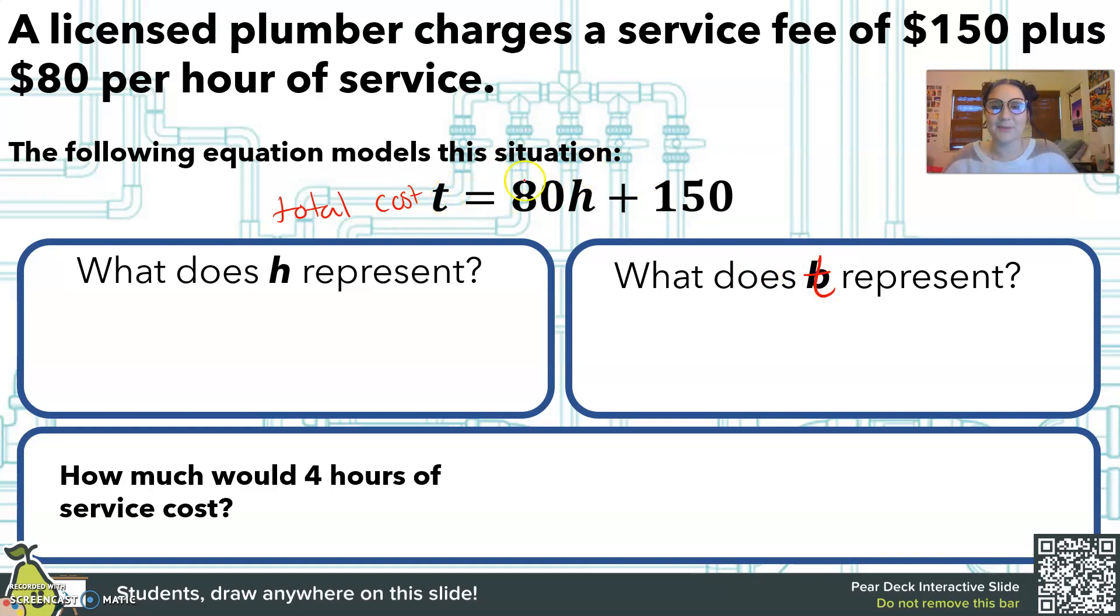So we have t equals 80 times the number of hours plus 150. So now I just want to know what does the h and what does the t represent? So the h represents the number of hours. Because we multiply the number of hours times how much is per hour. So h is hours. The t represents the total cost. Because if I have number of hours times 80 plus 150, that's how much the service will cost in total. So that is my total.